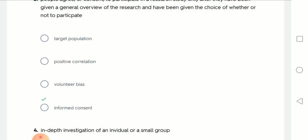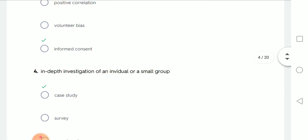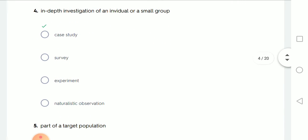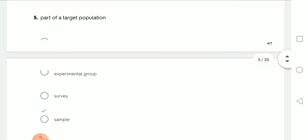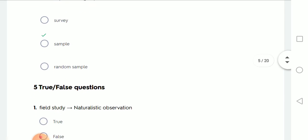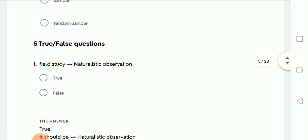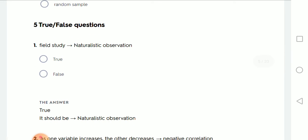In-depth investigation of an individual or just small group, of course the case study. Part of the target population, but I didn't mention this is a random one or not, so it's called sample. Right or wrong, true or false, I have here field study, naturalistic observation. Of course here the field study must be a naturalistic observation.